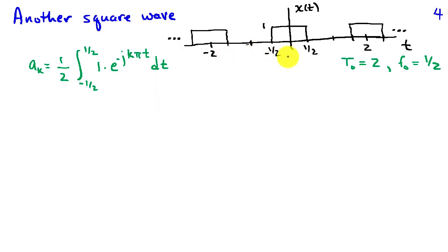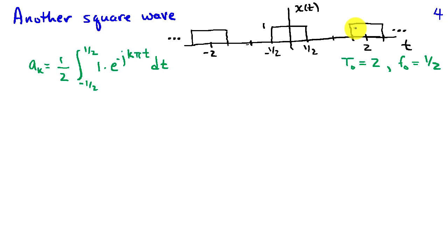Here I've sketched another square wave that is 1 between minus one half and one half, with period 2 and fundamental frequency one half. To evaluate the Fourier series coefficients, I'll choose integration limits from minus 1 to 1, since the signal is non-zero only between minus one half and one half in that interval. So a_k equals one half times the integral from minus one half to one half of 1 times e to the minus j k pi t dt.